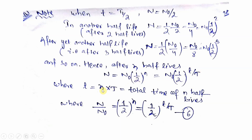The total time period within which disintegration occurs is the product of the number of half-lives into T-half. So N/N₀ = (1/2)^N, where small t equals N into capital T (T-half). Therefore N/N₀ = (1/2)^(t/T), and from here N equals small t divided by capital T.